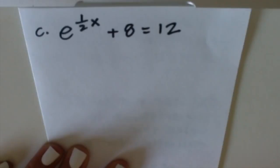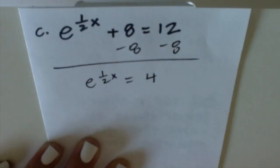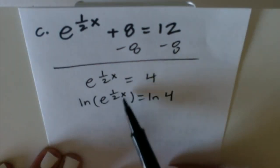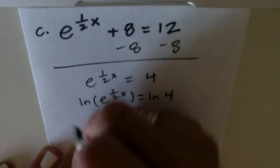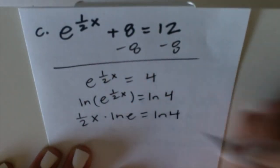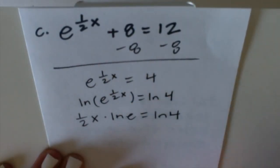This example says e^(1/2 x) + 8 = 12. So the first thing we're going to do is subtract 8 from both sides. Next, we're going to take the natural log of both sides. By properties of exponents, you can bring down the exponent to the front. ln(e) = 1.